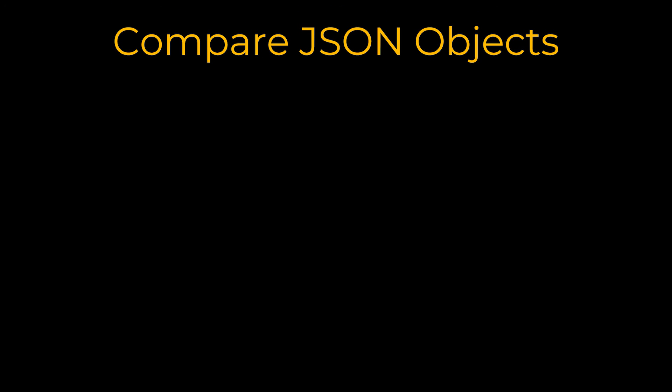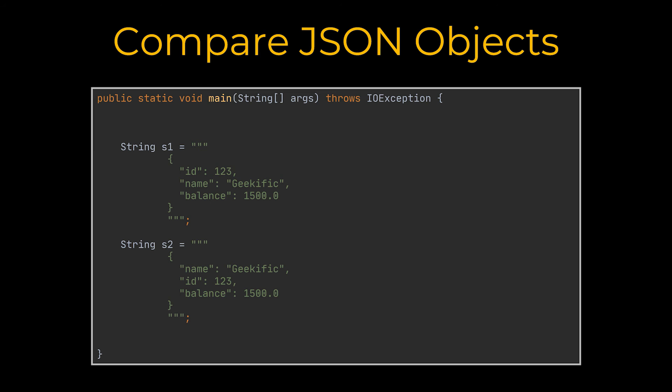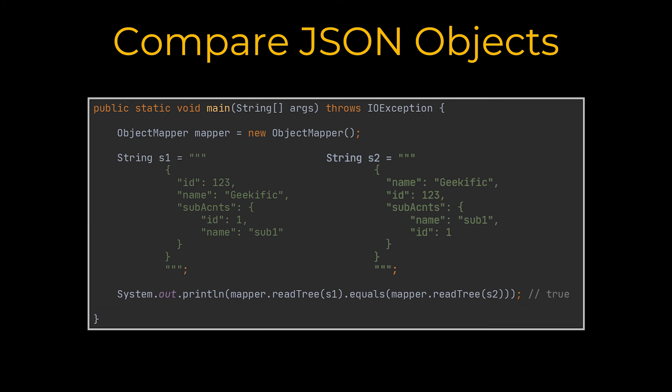In the last section of the video we'll look at how we can compare two JSON objects using the Jackson library. Suppose we have a JSON string defined as a first variable and want to compare it with another JSON defined in a second variable. This can be done with the help of the ObjectMapper class by reading the JSON input into a JsonNode with the readTree() method. Importantly, even though the order of attributes in both JSON variables is not the same, the equals method ignores the order and treats them as equal. We can also add a nested element inside the objects and the equals method still returns true.